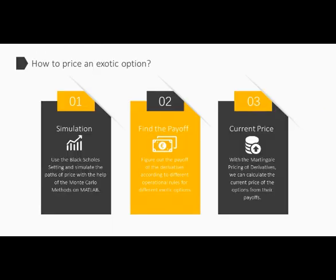How to price an exotic option? There are three major parts. The first is simulating the underlying assets. The second is finding the payoff of the derivatives. The third is computing the current price of the derivatives. For simulating the underlying assets, which are stocks in our cases, we need to use the Black-Scholes setting and simulate it with the help of the Monte Carlo method on a computer. After that, we figure out the payoff of the derivatives according to different optional rules for different exotic options. Finally, with the martingale pricing of derivatives, we can calculate the current price of the options from their payoffs.